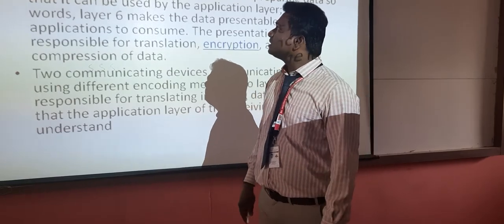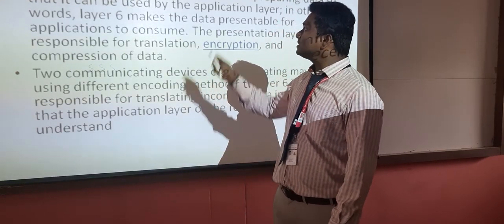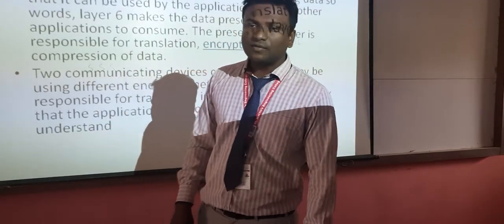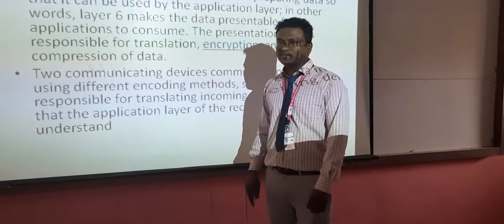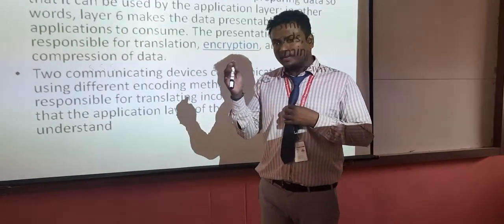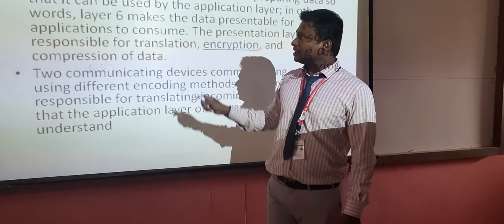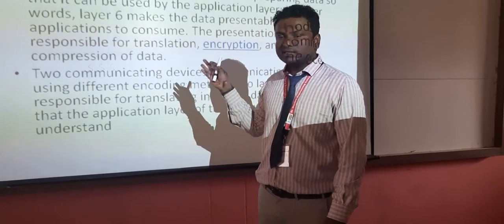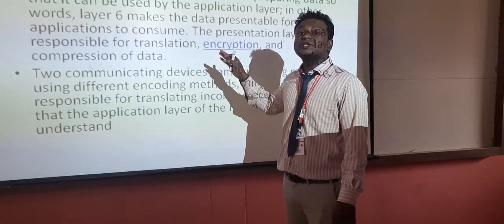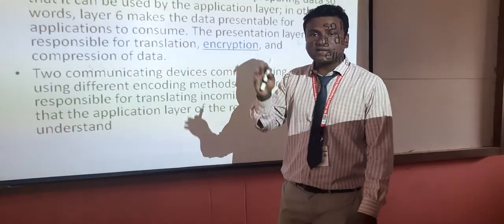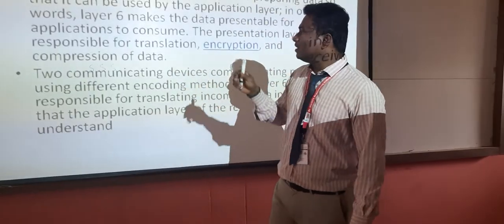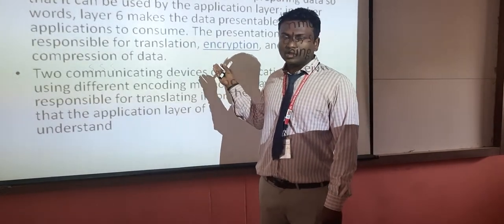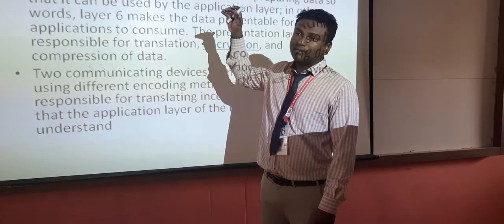The presentation layer takes data from the application layer. The data arrives in the form of alphabets and numbers, such as A, B, C, D and digits like 6, 5, 7, 4. This data is then converted into machine-understandable format — binary format — which consists of ones and zeros like 1, 0, 0, 1, 0, 1.